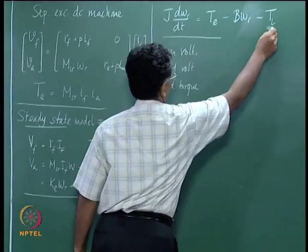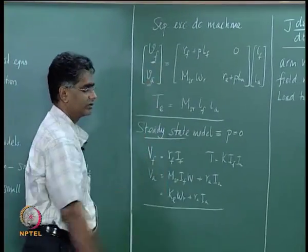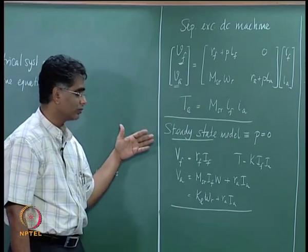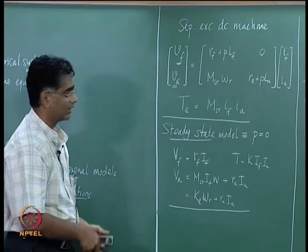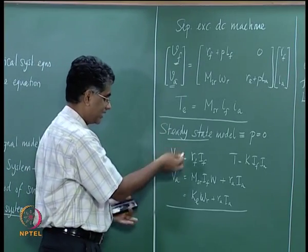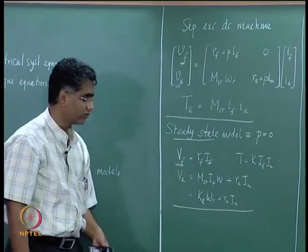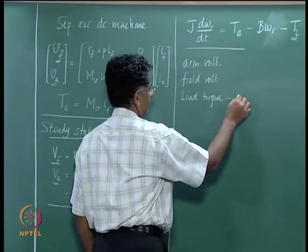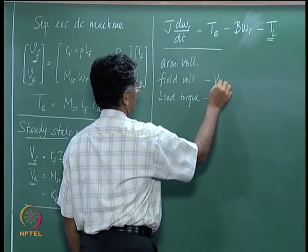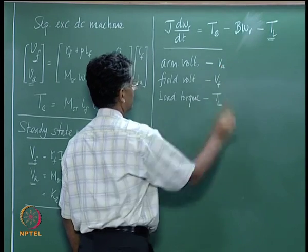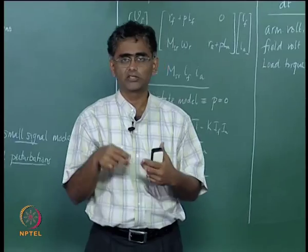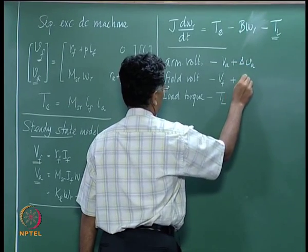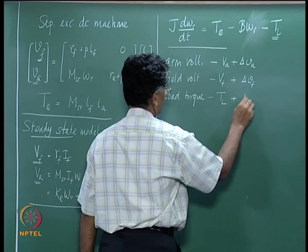We have the load torque TL, the field voltage Vf, and the armature voltage Va as inputs. Now, we assume the machine is operating under some steady state with applied field voltage Vf, armature voltage Va, and load torque TL. Over and above these steady-state values, there is a small disturbance added: a small disturbance δVa, a small disturbance δVf, and a disturbance δTL.